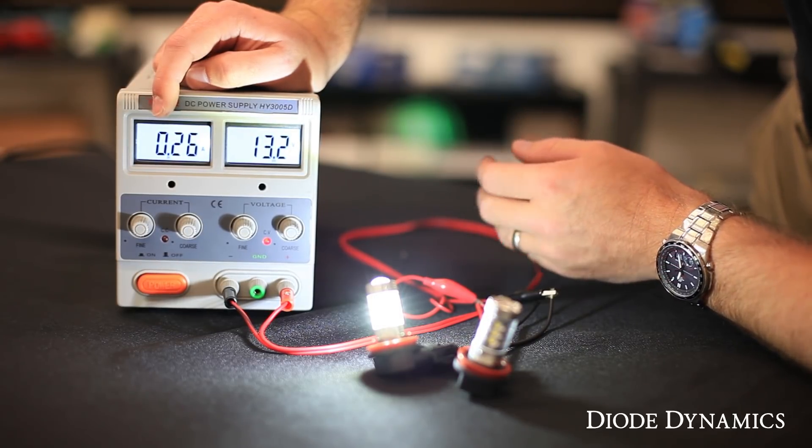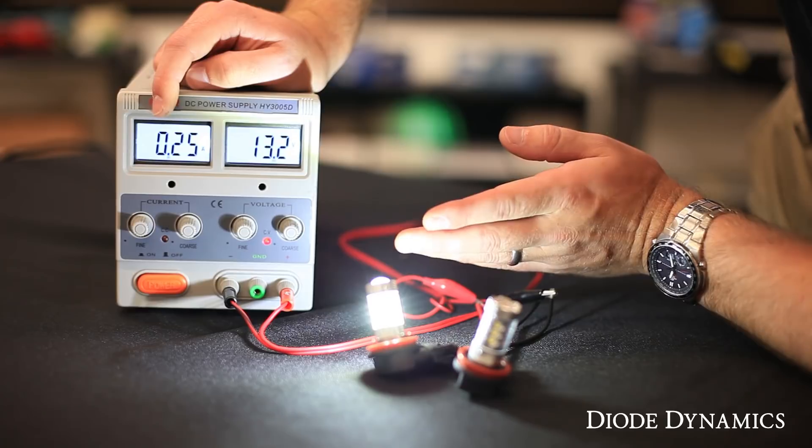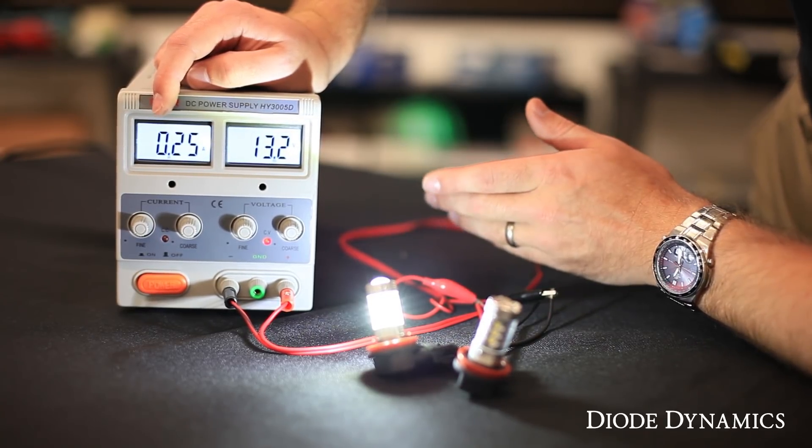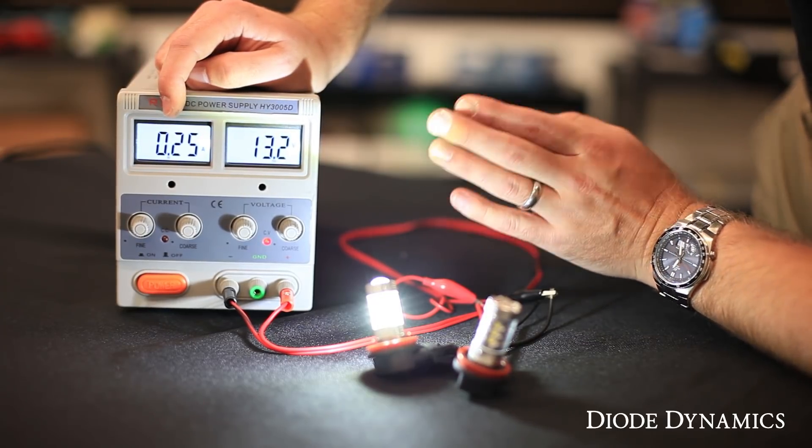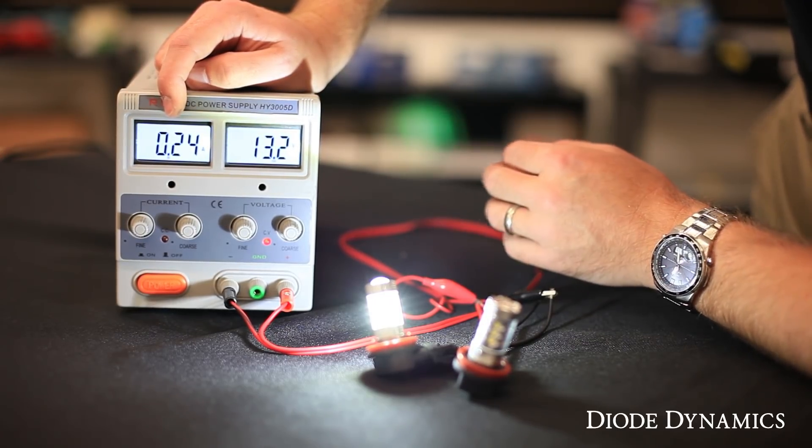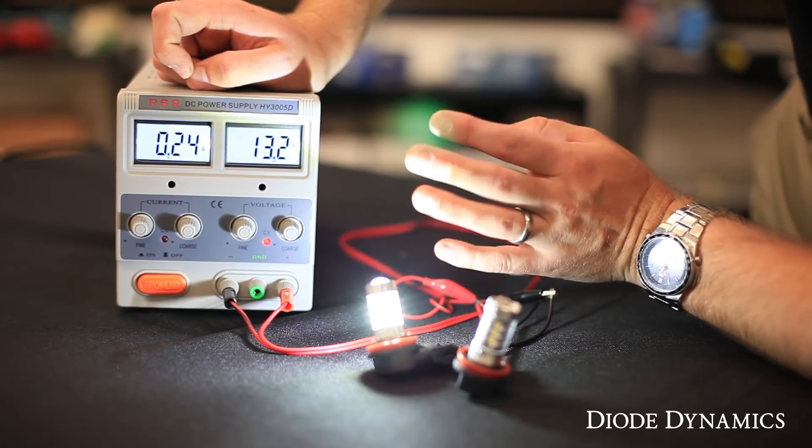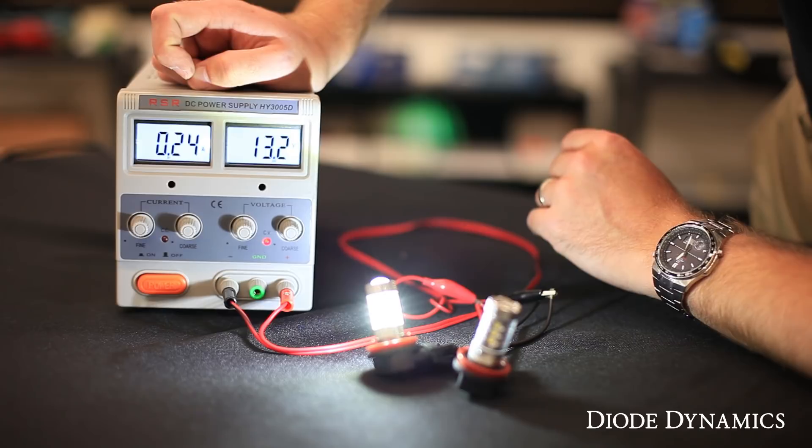That's about a third of the total power it started with. That means that the total brightness is also going to be about a third from what you started with. Most suppliers rate their bulbs based on the starting brightness, which, as you can see, is very misleading. At Diode Dynamics, we measure our total output of the bulbs after they're fully warmed up to get a more realistic type of rating.